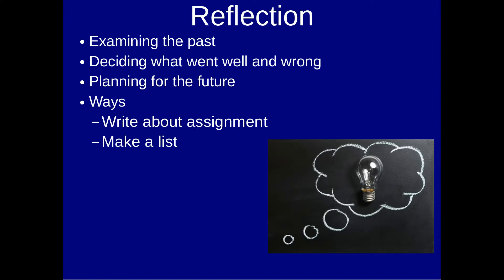Reflection primarily involves three things: examining the past, deciding what went well and wrong, and then planning for the future based on what you've looked at from the past. An example of this inside the classroom is that after students do a major assignment, you might want to have them reflect: how did that presentation go? What went well? What went wrong? How would you do it differently in the future? This is the classic example that I have my students do multiple times whenever we have a significant assignment. By thinking about what happened in the last assignment, students are able to see what they were strong at, what they were weak at, and they begin to learn how to develop strategies to overcome their weaknesses for the future.